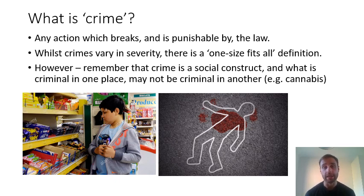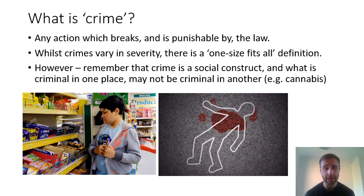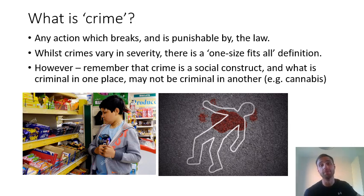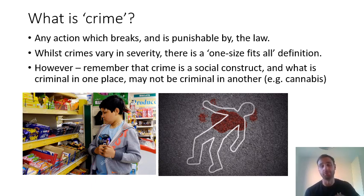Another great example is homosexuality. Homosexuality was a crime in this country in years past, and it was decriminalised thanks to the work of many campaigning people. Now it is not a crime to be gay or to engage in homosexual activity — in fact, it is legal to marry someone of the same sex. You can see how crime evolves and changes over time, but the definition of crime remains the same: any action which breaks and is punishable by the law.